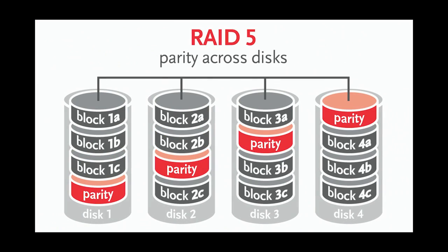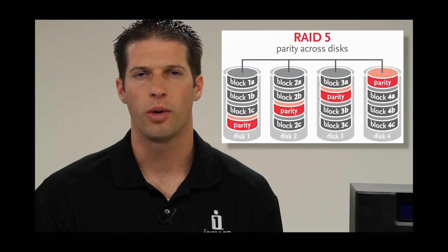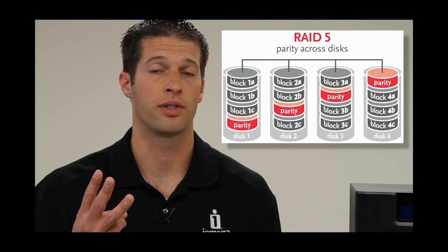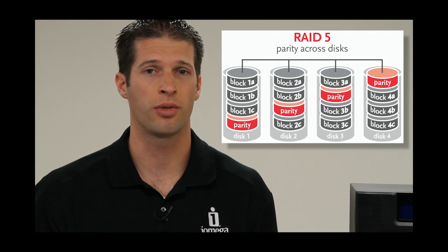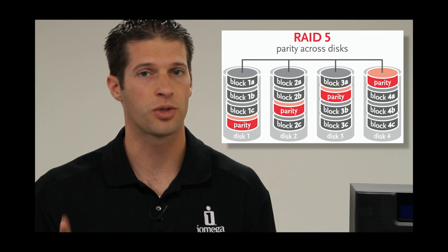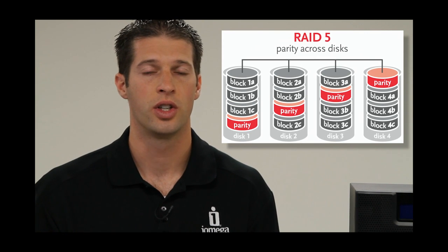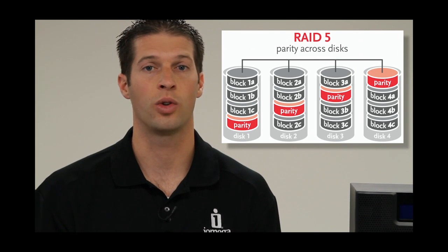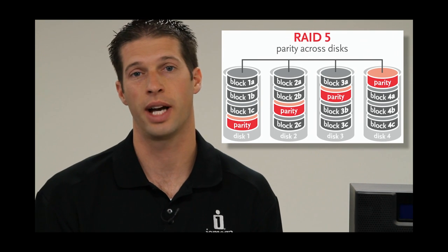Next, RAID 5. Data is written across all the drives with extra information, called parity, such that your data can be retrieved if a drive fails. A RAID 5 storage device requires a minimum of three drives. The usable capacity will generally be the physical capacity less one drive. So if you have four one-terabyte drives, there will only be three terabytes of usable capacity.